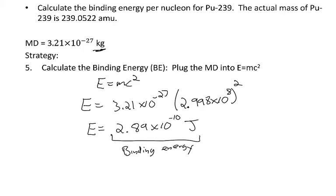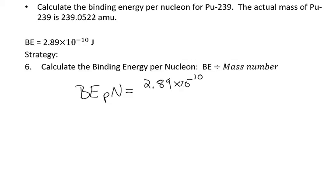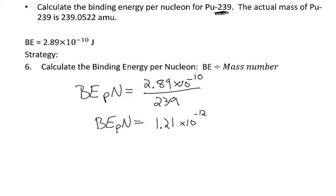We're just one more step away. Here's the binding energy we calculated in the previous step. All I need to do to get the binding energy per nucleon is take that binding energy, 2.89 × 10⁻¹⁰ joules, and divide it by the total number of nucleons, which is the mass number. Since it's plutonium-239, the mass number is 239, and so my binding energy per nucleon comes out to be 1.21 × 10⁻¹² joules.